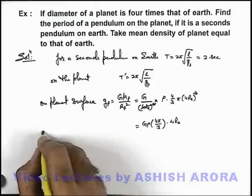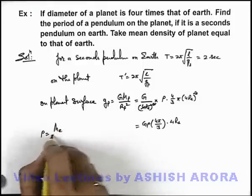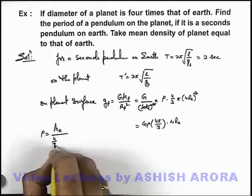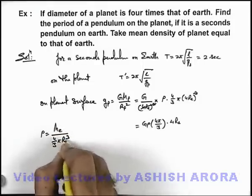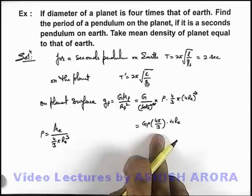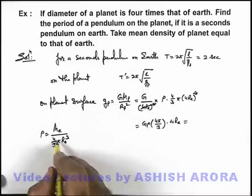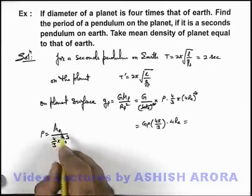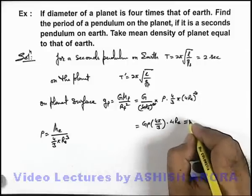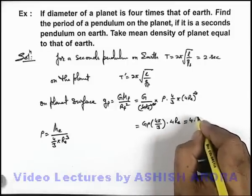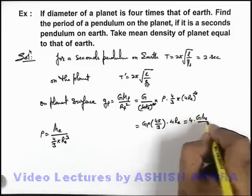And this ρ we can substitute as mass of Earth divided by 4/3 π Rₑ cubed. If we substitute the value over here you can see the result we are getting is here 4/3 π ρ is Mₑ by Rₑ cubed, so this will be 4 times G Mₑ over Rₑ squared.